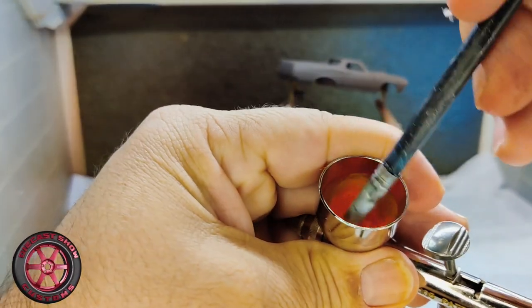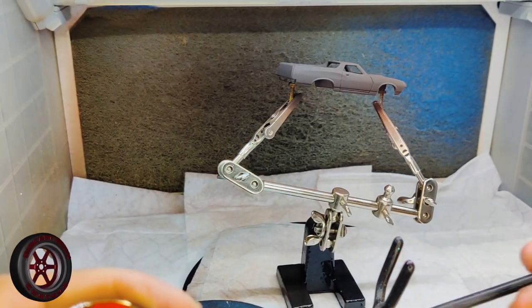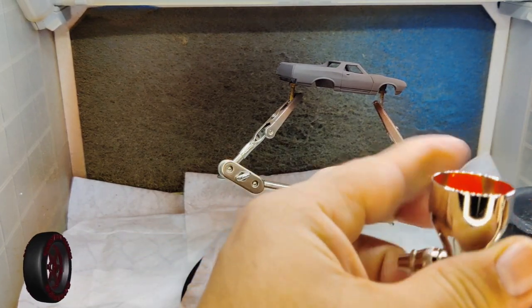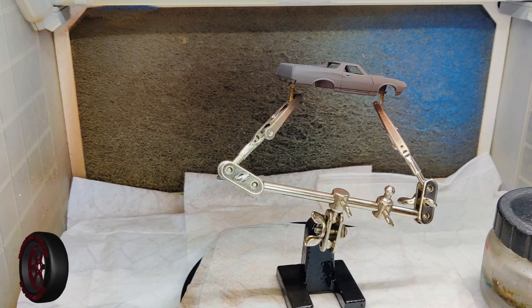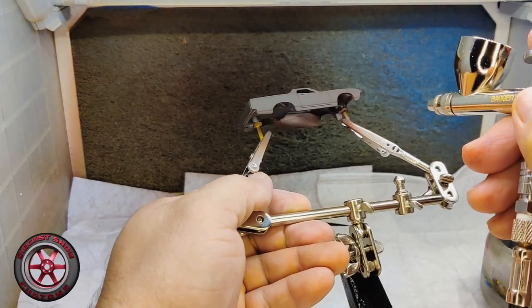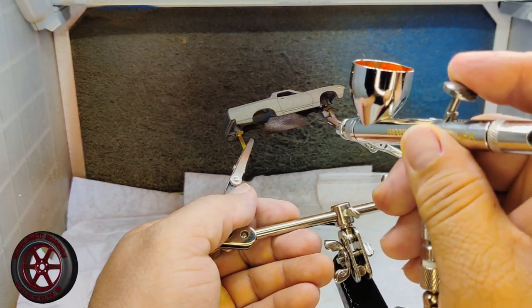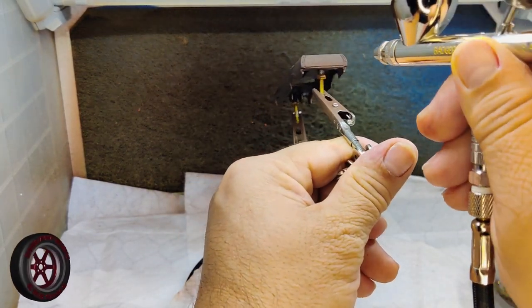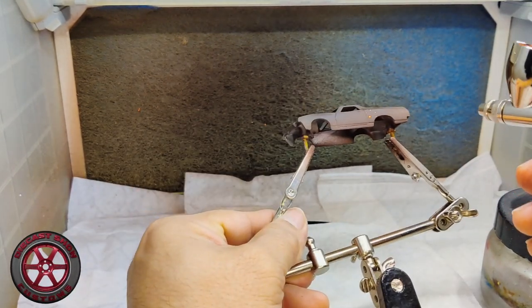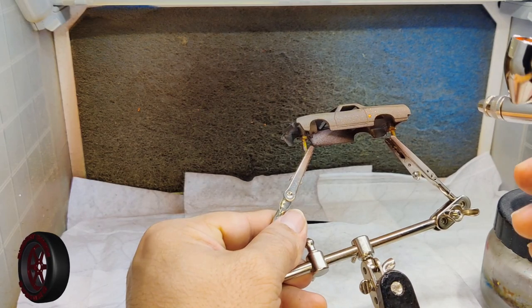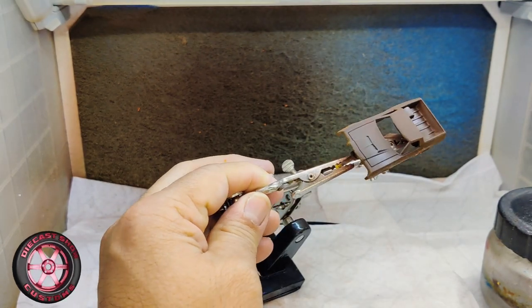I'm going to shoot it at around 30 psi and kind of far away because I'm looking for a spatter effect. I could also do this with a brush. I could flicker the brush with the paint. Notice that I'm not trying to cover that whole thing. I just want to get a spatter of that paint. You see it's splattering all over the place, but this is rust. Rust is not perfect.